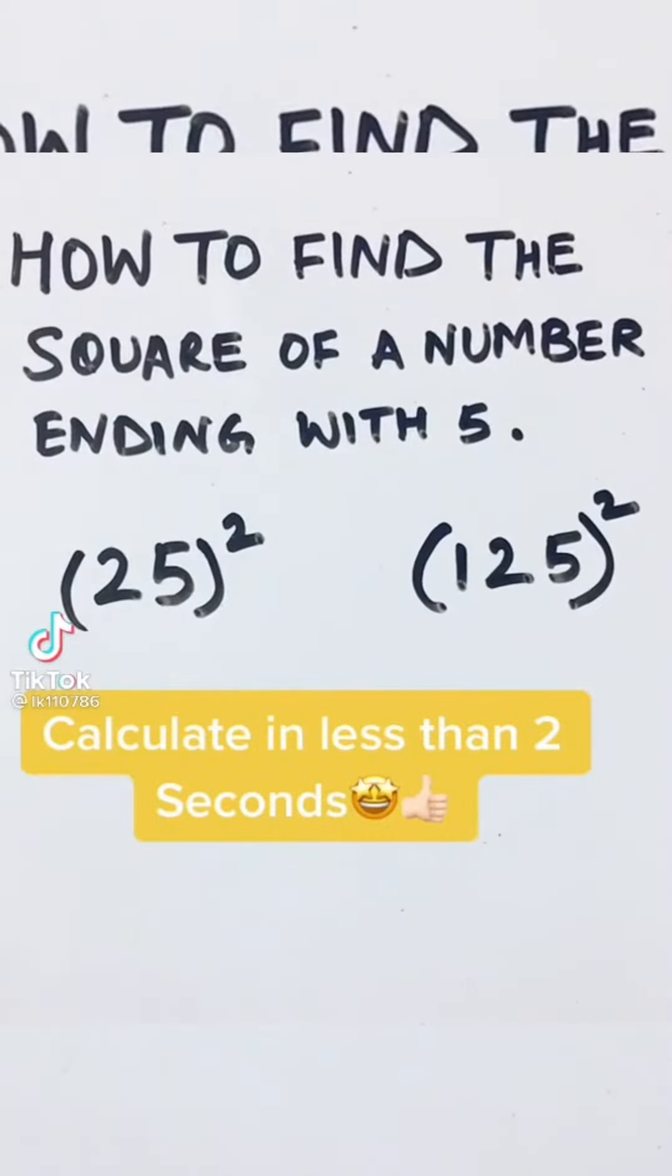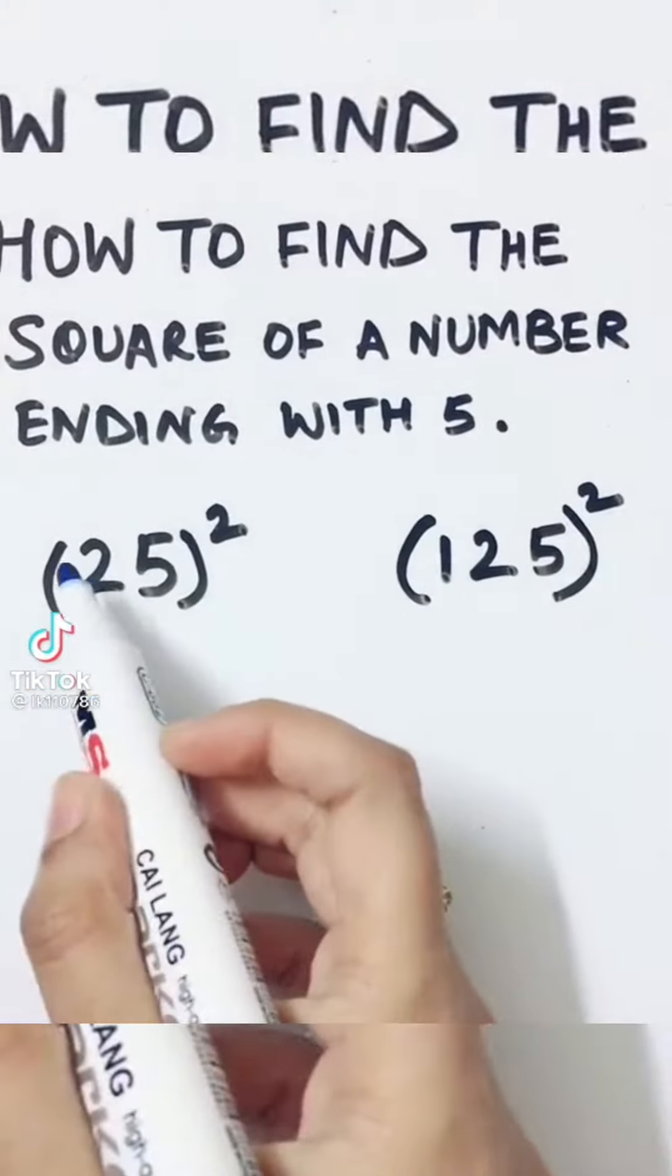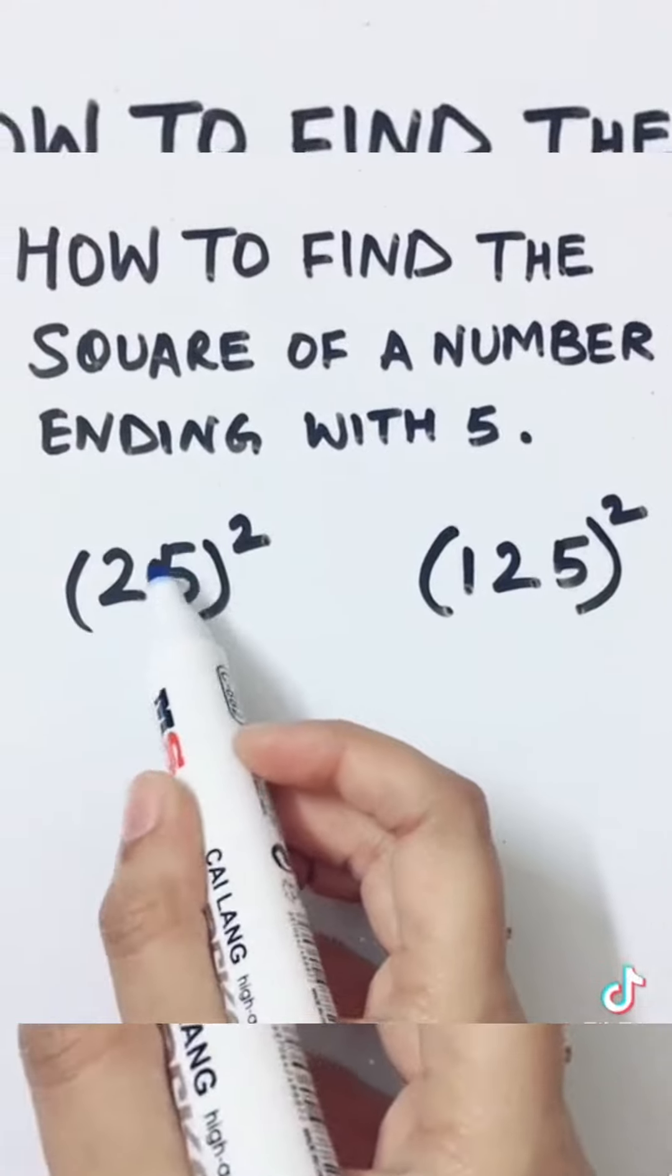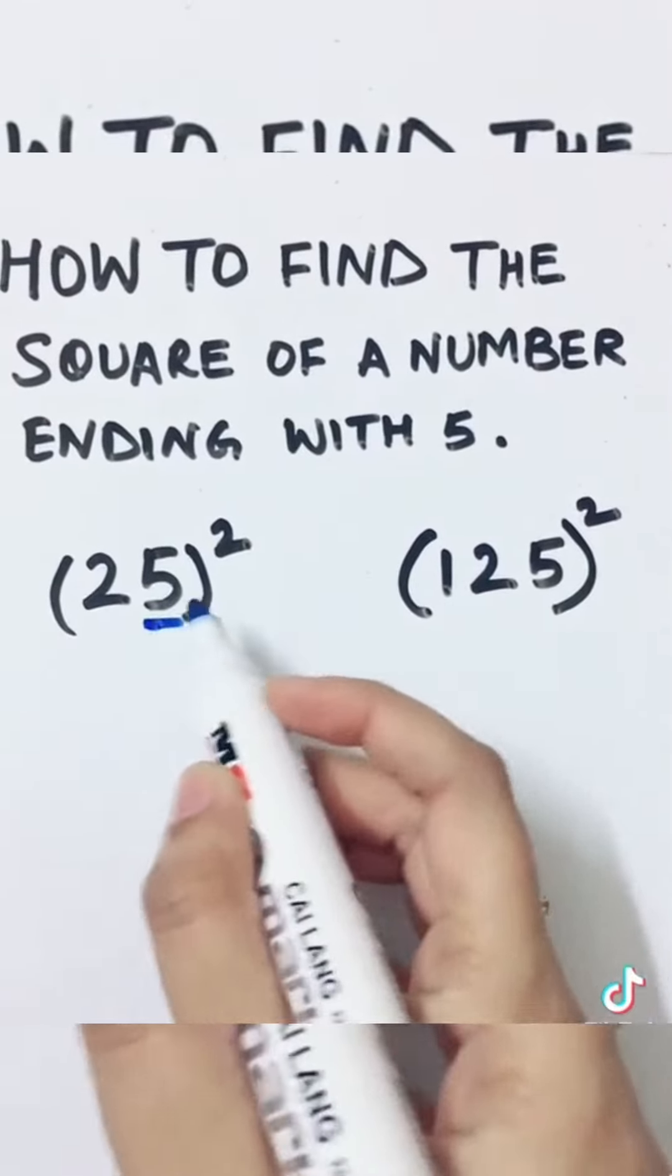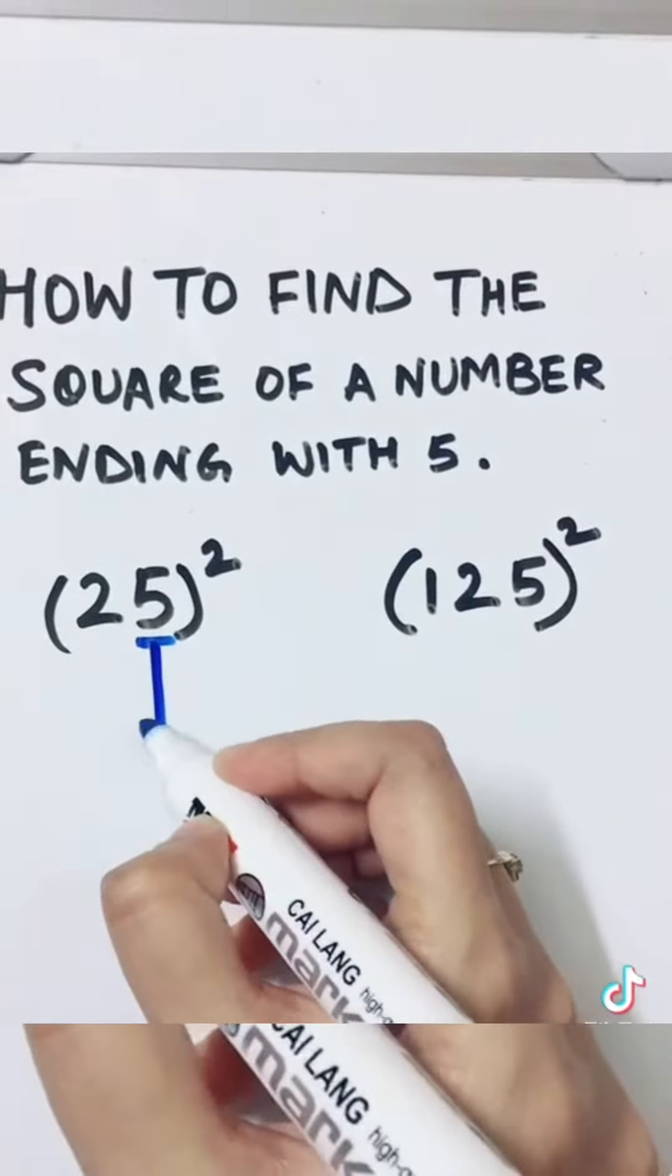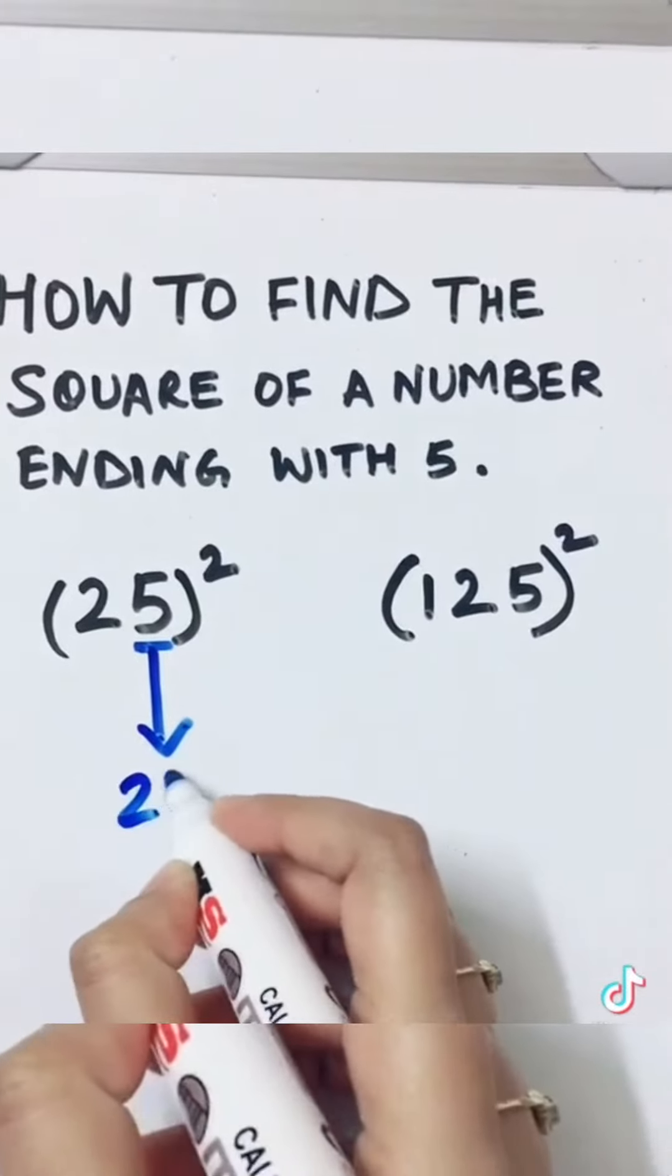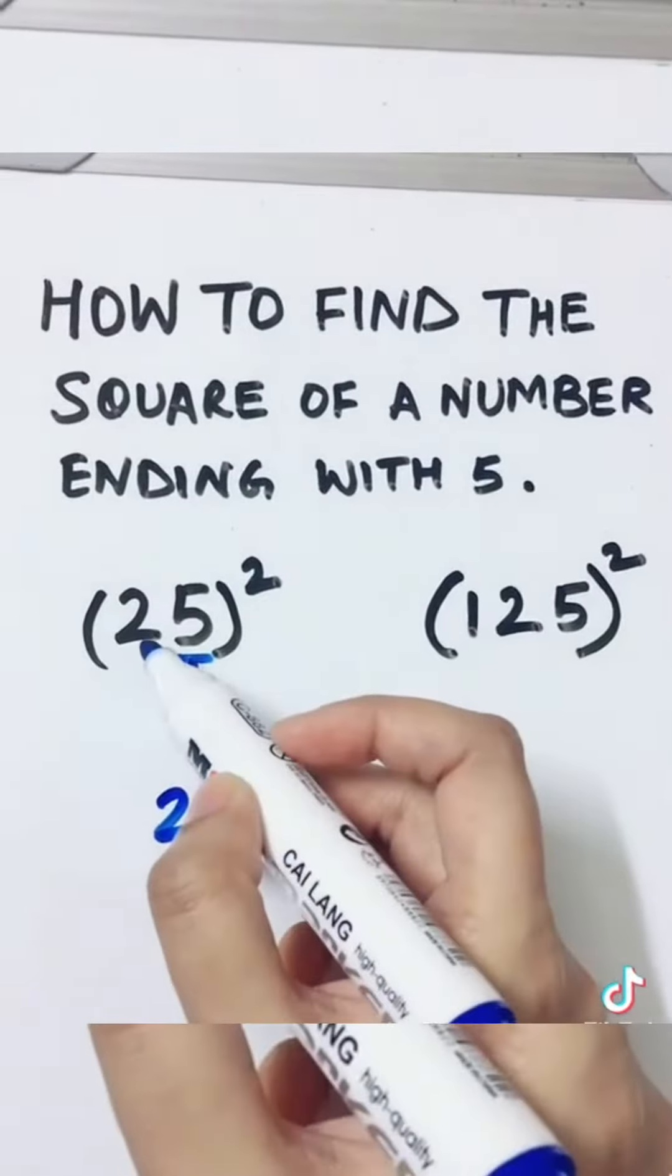How to find the square of a number ending with 5. Let's see, we have 25 squared. We take this digit 5 and we take the square of that. 5×5 is 25, everybody knows. Now we take...